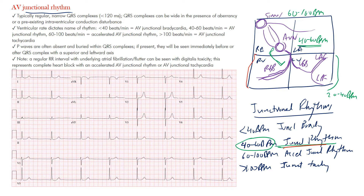The ventricular rate dictates the name: less than 40 is junctional bradycardia, 40–60 is junctional rhythm, 60–100 is accelerated junctional rhythm, and over 100 is junctional tachycardia. Because the rhythm originates in the AV junction, conduction travels downward through the normal pathway but may also travel retrogradely — backward — potentially forming both a QRS complex and a retrograde P wave.